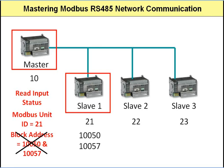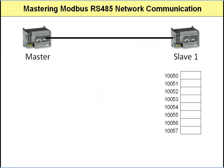Here's where Modbus is a little different from many other protocols. We're concentrating on these memory block addresses 10,050 and 10,057. What we'd like to do is simply specify those two addresses, send the message to the slave, and have the slave respond back with the data at those two memory blocks. This diagram shows our example with the master and slave, and gives a representation of some of the memory blocks of the slave in the inputs area.